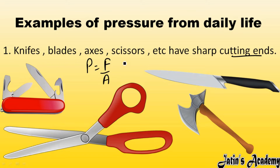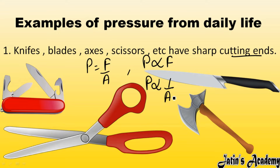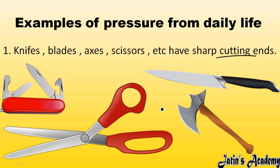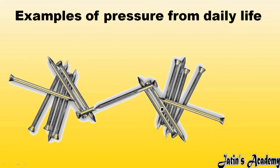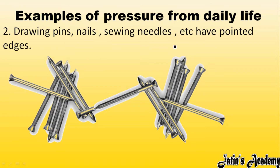Pressure and force are directly proportional, and pressure and area are inversely proportional. When you apply more force on an object, pressure will be more. If you increase the area of any object, pressure applied will be reduced. In the case of a knife, a sharp cutting edge is there because area is less — if area is less, pressure exerted on any object will be more. So we can easily cut an apple using the sharp cutting edge of a knife. That is why we use things with sharp cutting edges.